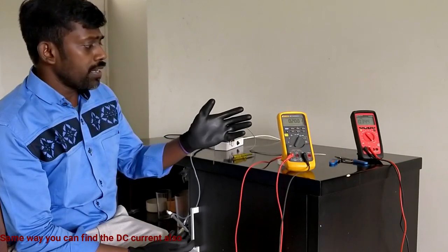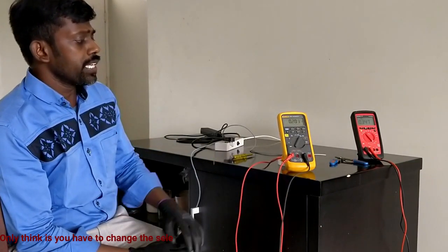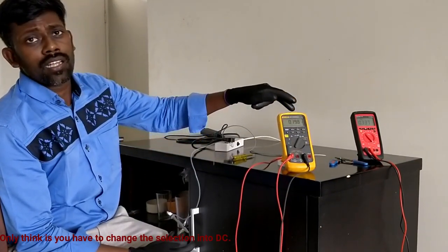Same way you can find that for DC also. Only thing you have to do is change the selection into DC.